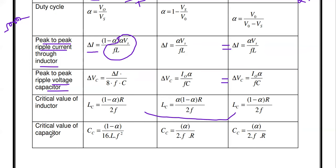The critical value of capacitor Cc for the buck converter is: Cc = (1 − α) / (16 × L × F²). For the boost converter: Cc = α / (2 × F × R). For the buck-boost converter, the critical capacitor formula remains the same as the boost converter: Cc = α / (2 × F × R). The ripple current, ripple voltage, and critical capacitor formulas are the same for boost and buck-boost converters.